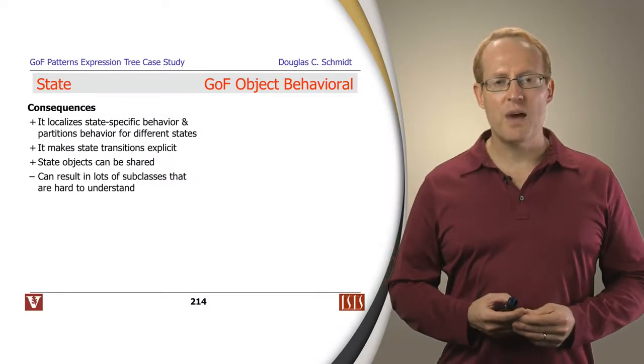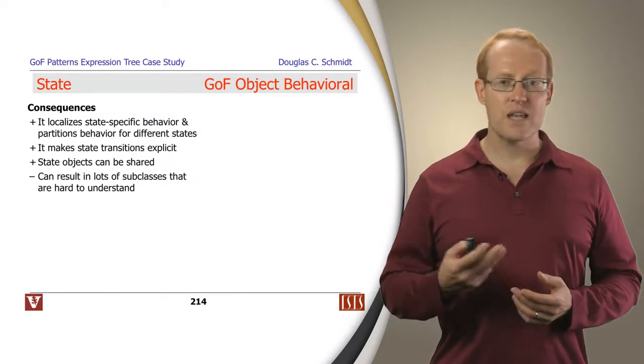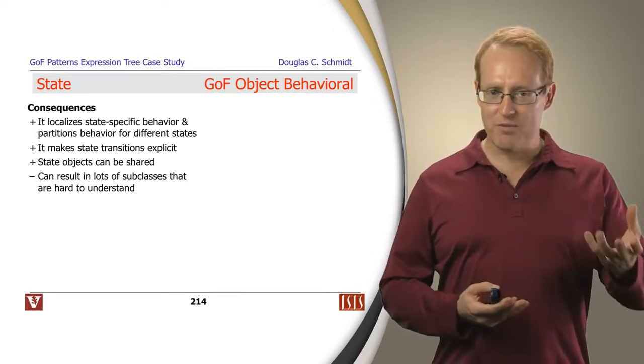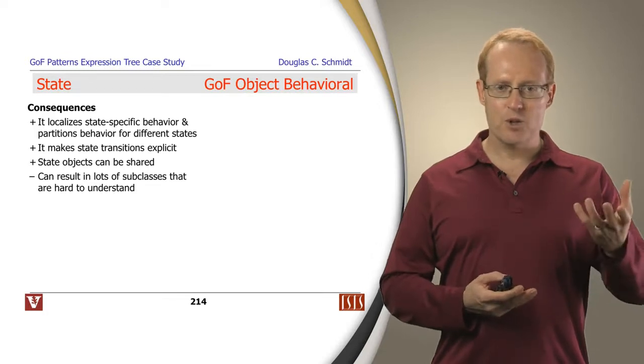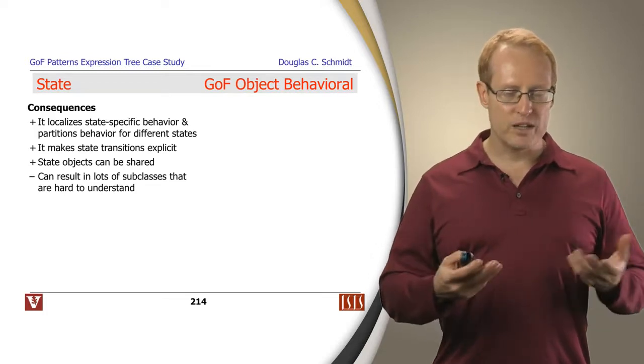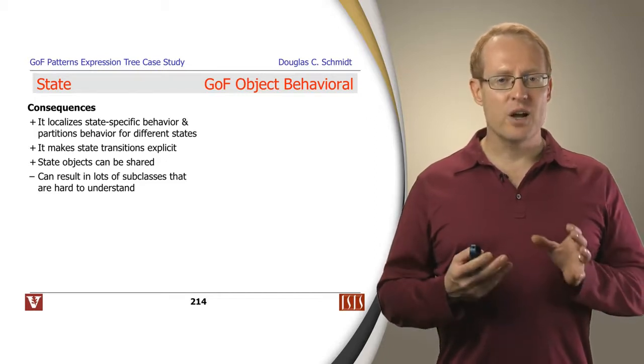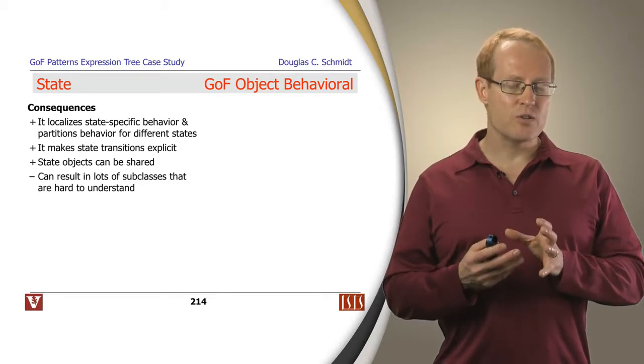So some of the consequences of this pattern: it tends to localize state specific behavior and it partitions behavior for different states. In our case we have different behaviors for different methods, makeTree, format, eval, print and so on based on the state that they happen to be in at the time. It can also be used to make the state transitions explicit. As you saw in the previous slide when we got done with successfully parsing the tree and building the composite node hierarchy we then transition into a new state.